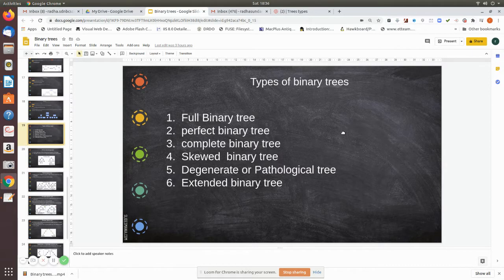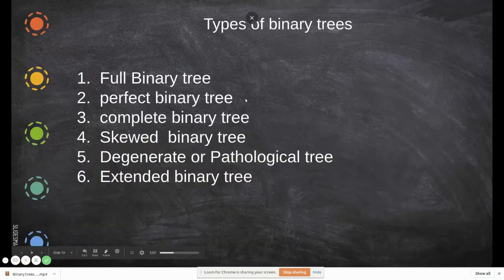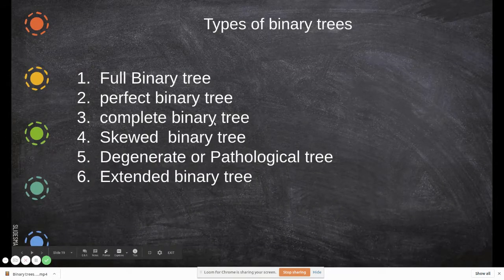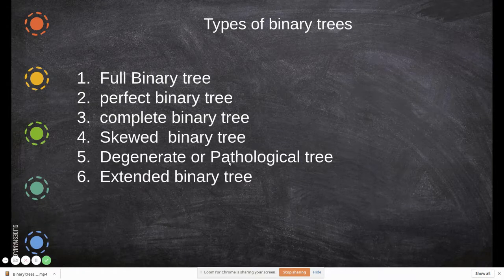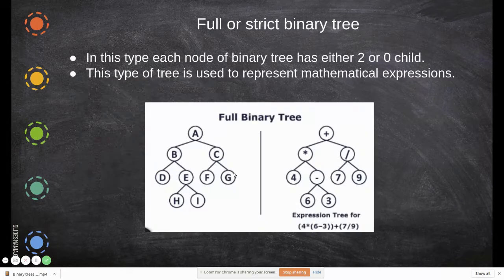Let's see the different types of binary trees available. Some of the binary trees available are: full binary tree, perfect binary tree, complete binary tree, skewed binary tree, degenerate or pathological tree, and extended binary tree. First we will see what is a full binary tree.